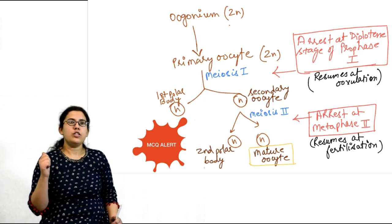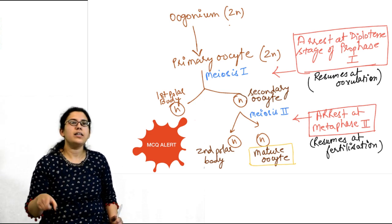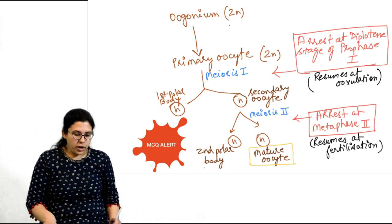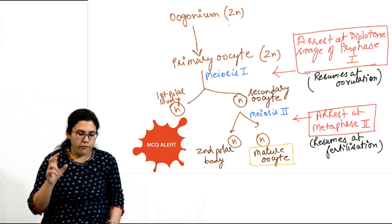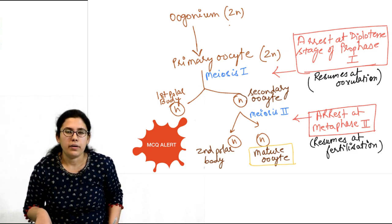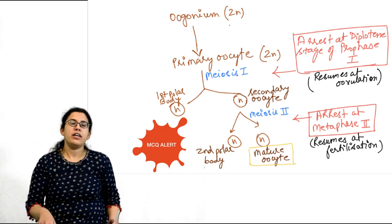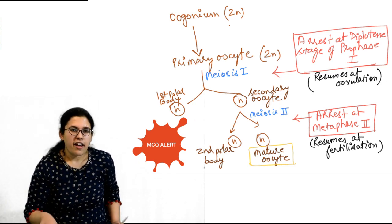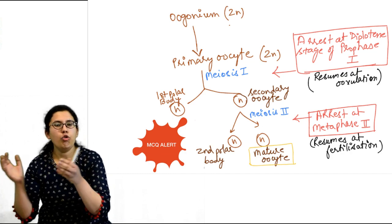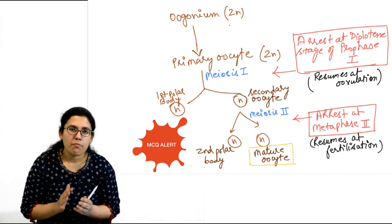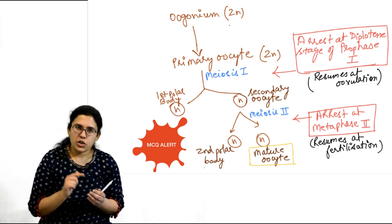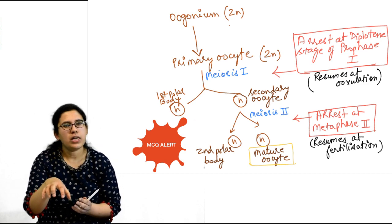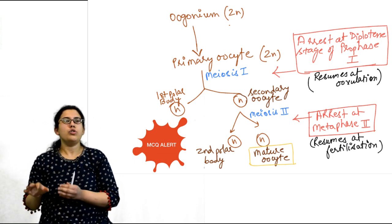The first arrest resumes at ovulation — meiosis 1 is completed and the first polar body is ejected. The second important arrest: the secondary oocyte undergoing meiosis 2 arrests at metaphase 2. This second arrest resumes only if, by fertilization, the sperm is able to fertilize the egg. Then the second polar body is ejected and a mature egg is formed when the secondary oocyte completes its meiosis 2 division.